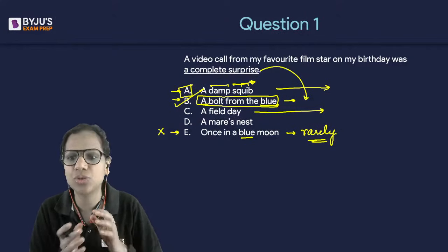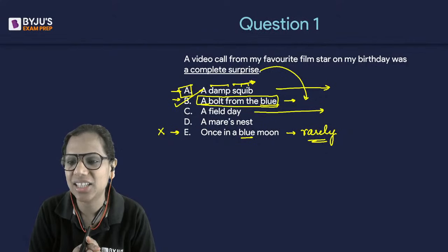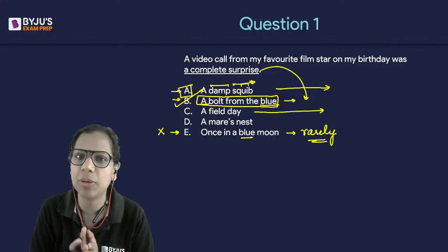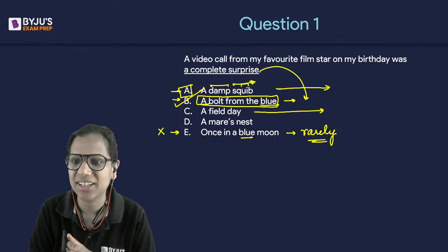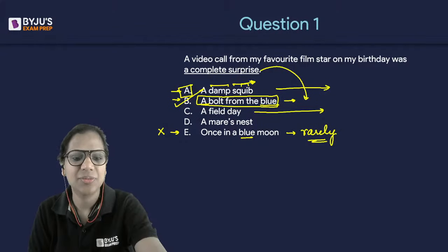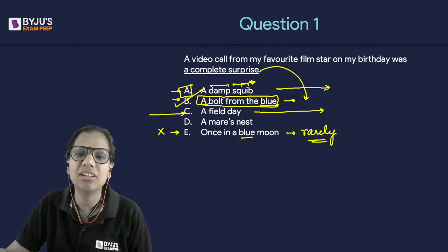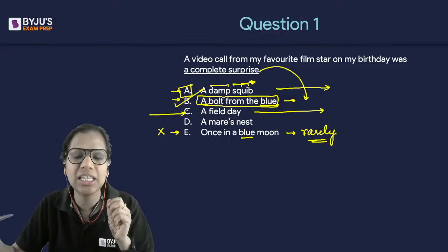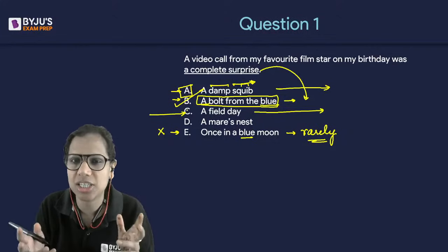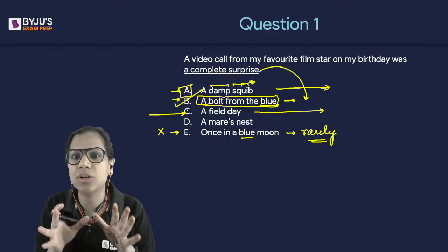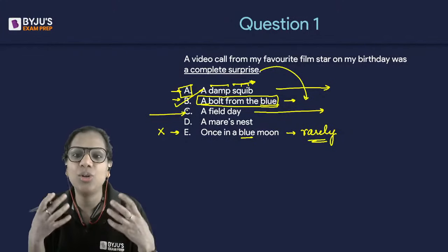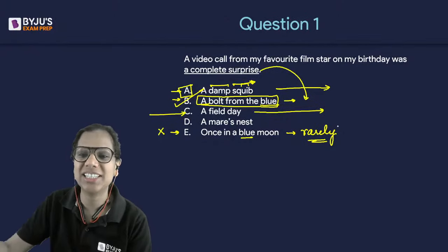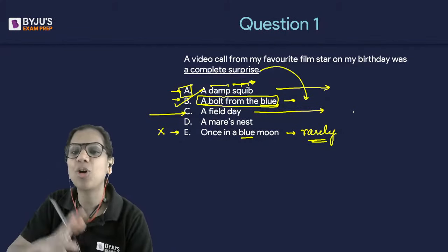This session will be available in recorded format, and I can share these idioms in a PDF on our Telegram group. A field day: when someone has a field day, they have a great time or opportunity to make profits at your expense. For instance, if you are a celebrity caught up in a court case, the newspapers will have a field day when your case comes to court. A field day means an opportunity for success at someone else's expense.